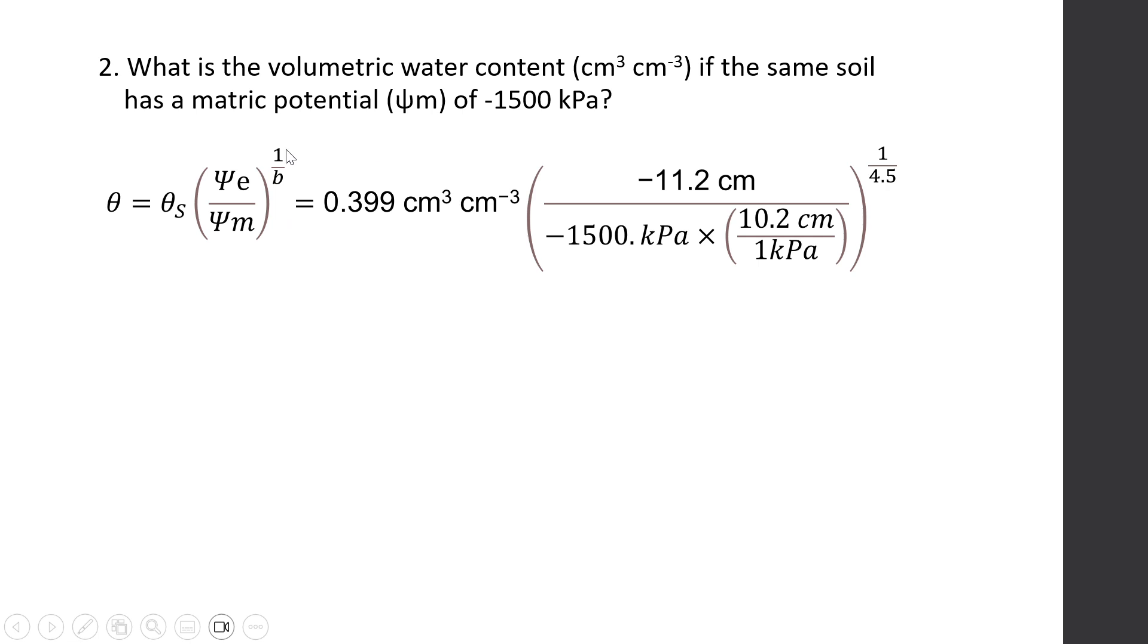Number two, what is the volumetric water content if the same soil has a matric potential of minus 1500 kPa?